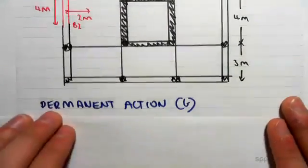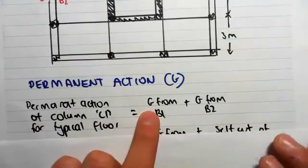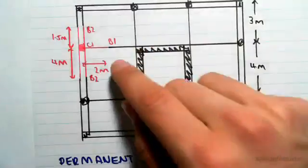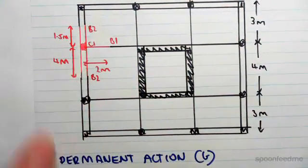The permanent action G on column C1 for a typical floor will be G from B1 over here, G from B2 over there, and G from B3 over here.